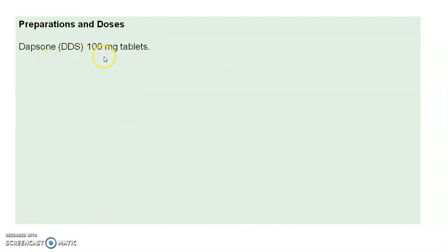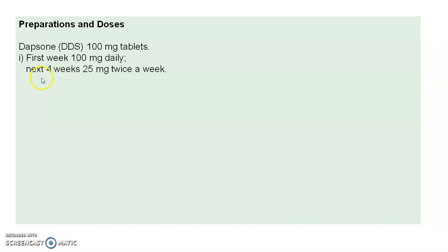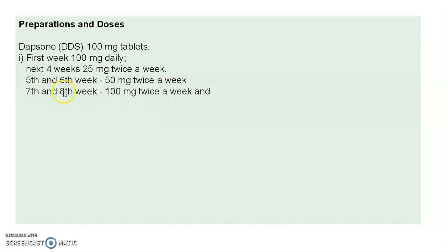Dapsone or DDS is available as a 100 mg tablet, used especially for the treatment of leprosy and also TB. Because leprosy affects neurons, long-term treatment is required. The dosing schedule is: first week, 100 mg daily; second to fourth weeks, 25 mg twice a week; fifth and sixth weeks, 50 mg twice a week; seventh and eighth weeks, 100 mg twice a week; thereafter, 100 mg twice a week is continued.